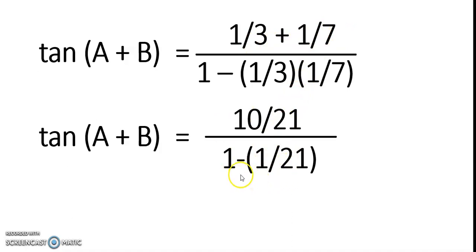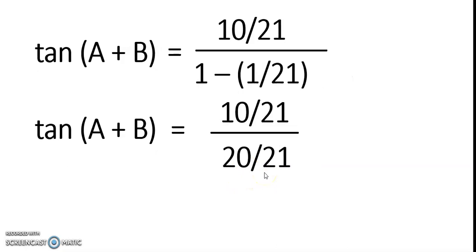Then 1 minus 1 over 21, that's 20 over 21. And then 10 over 21 divided by 20 over 21, the answer is 1 half.